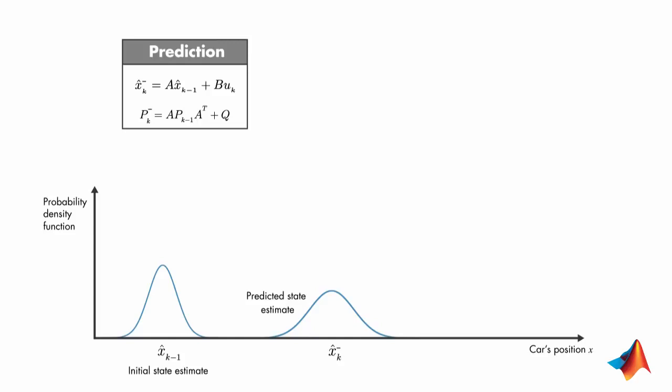Here, the system model is used to calculate the a priori state estimate and the error covariance P. For our single-state system, P is the variance of the a priori estimate, and it can be thought of as a measure of uncertainty in the estimated state. This variance comes from the process noise and propagation of the uncertain x-hat k-1. At the very start of the algorithm, the k-1 values for x-hat and P come from their initial estimates.